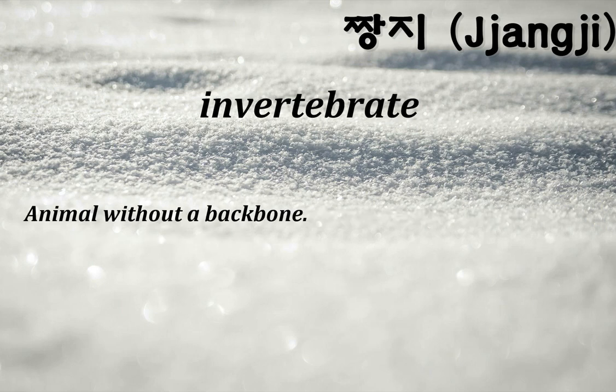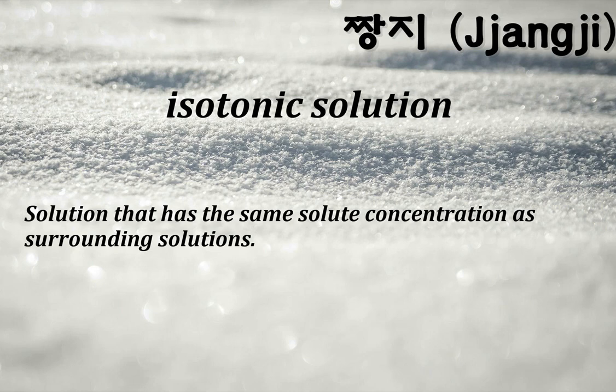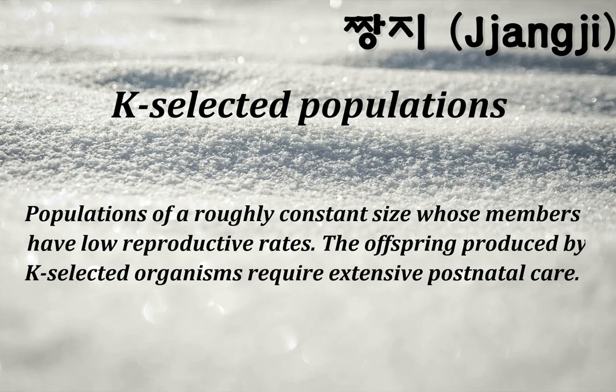Invertebrate: animal without a backbone. Ion: an atom with a positive or negative charge. Isotonic solution: a solution that has the same solute concentration as surrounding solutions. K-selected populations: populations of roughly constant size whose members have low reproductive rates; the offspring produced require extensive postnatal care.